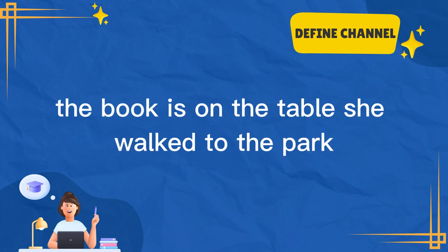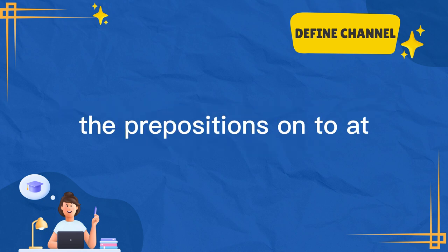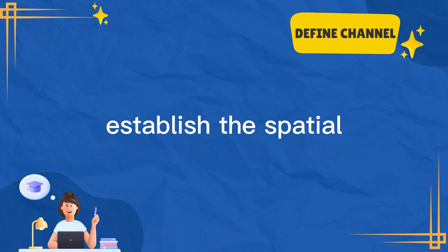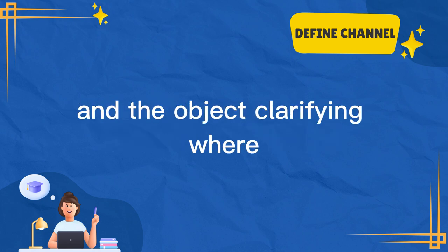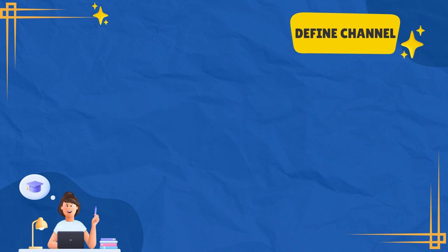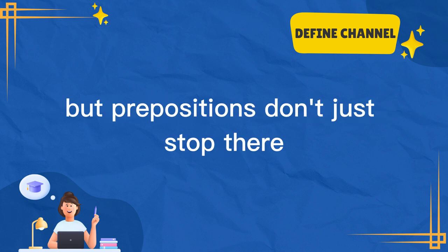Consider the following examples: "The book is on the table." "She walked to the park." "They met at the cafe." In each of these sentences, the prepositions on, to, at establish the spatial or directional relationship between the subject and the object, clarifying where, when, or how the action takes place.